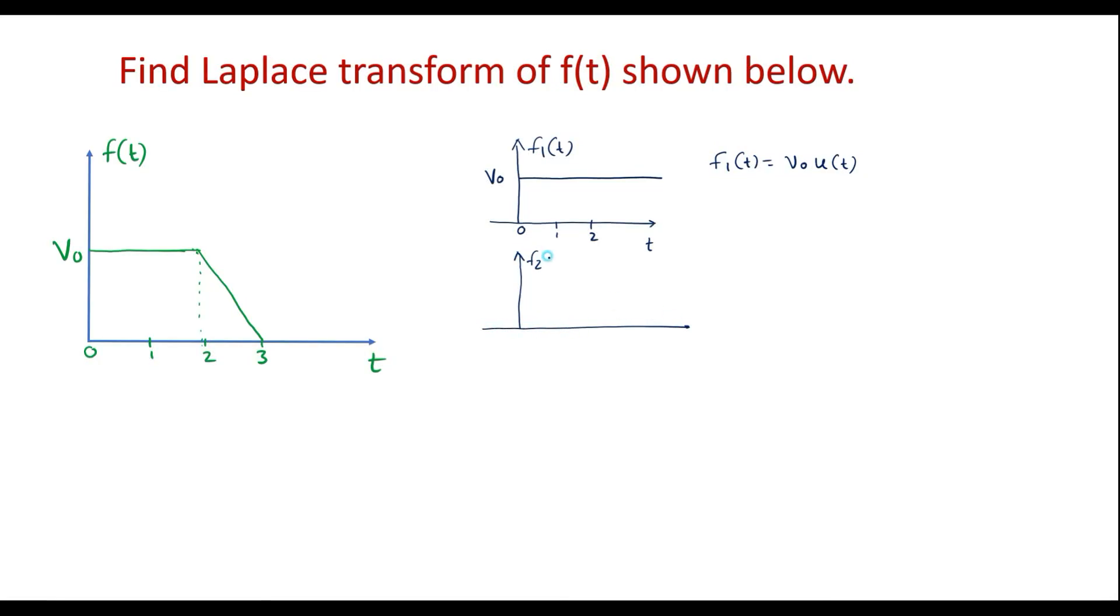I will call this as f2 of t. This is 1, this is 2. Now, at t equal to 2, I should add one ramp signal, that is a negative ramp signal. The slope of this signal is minus v0.